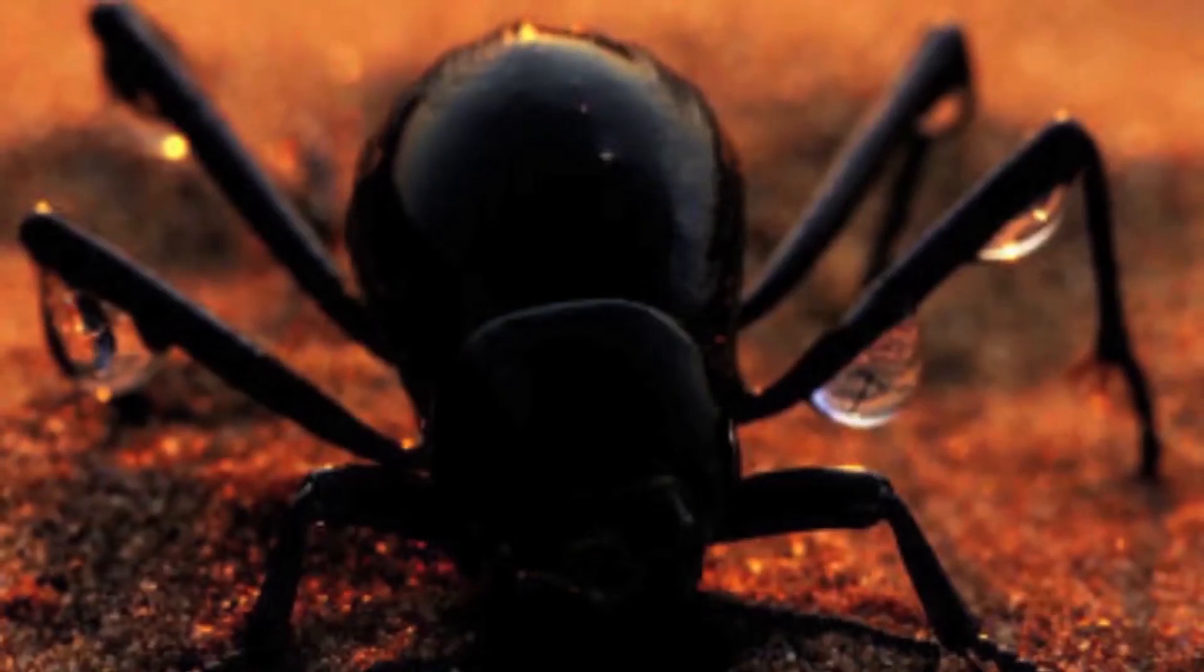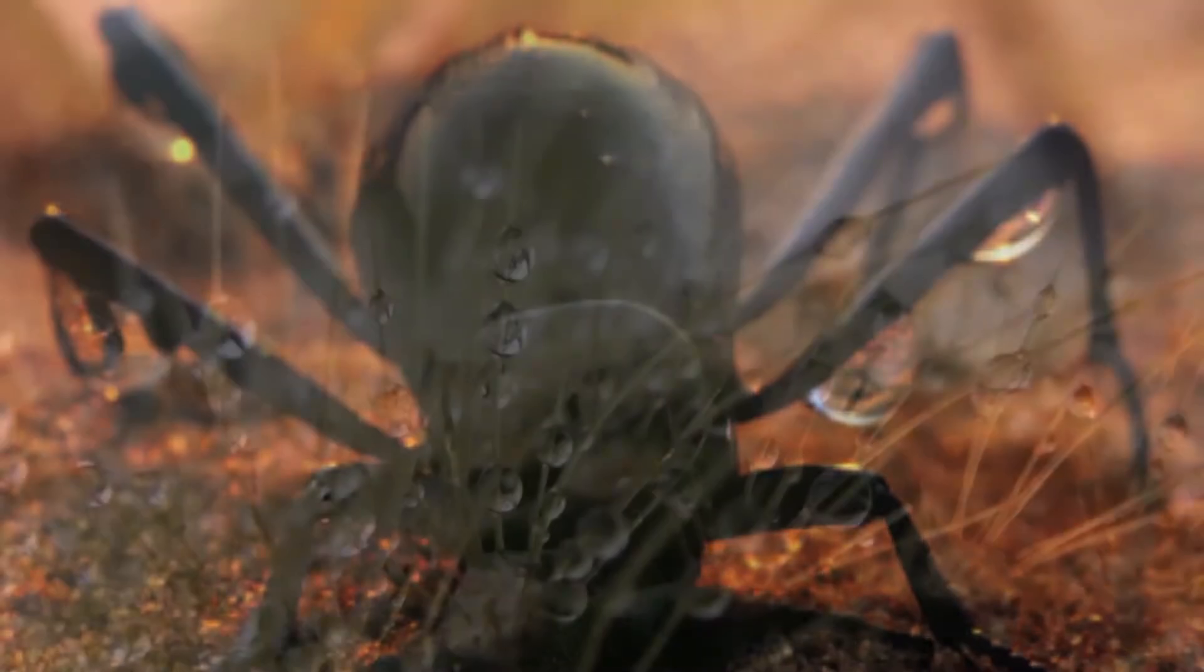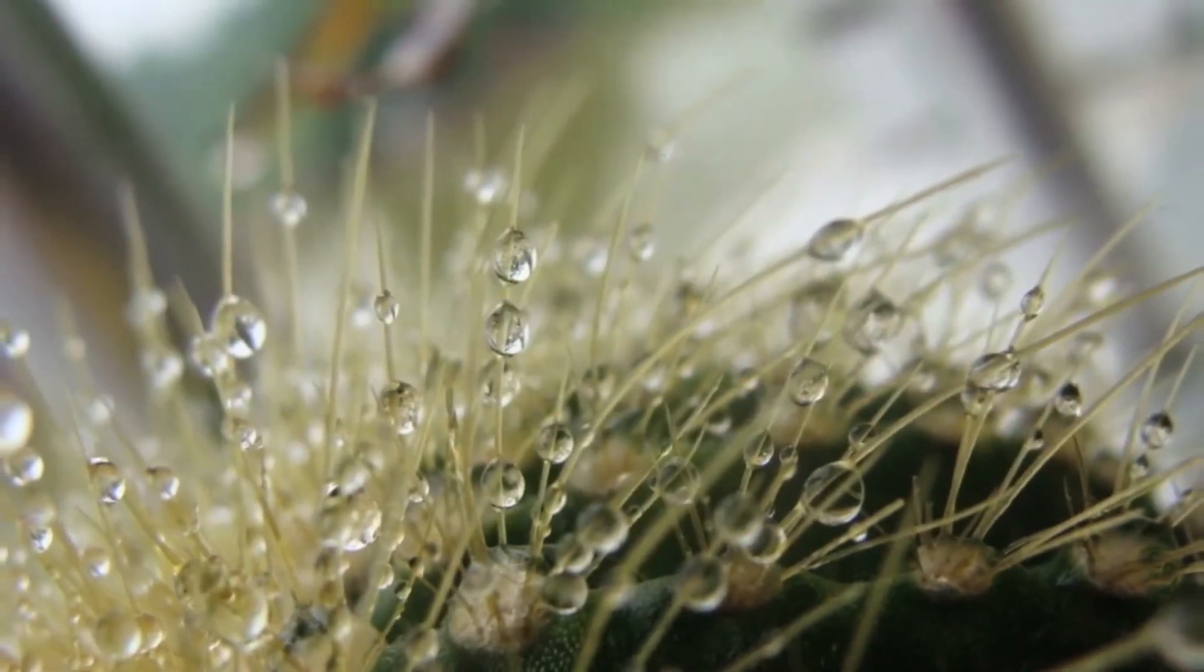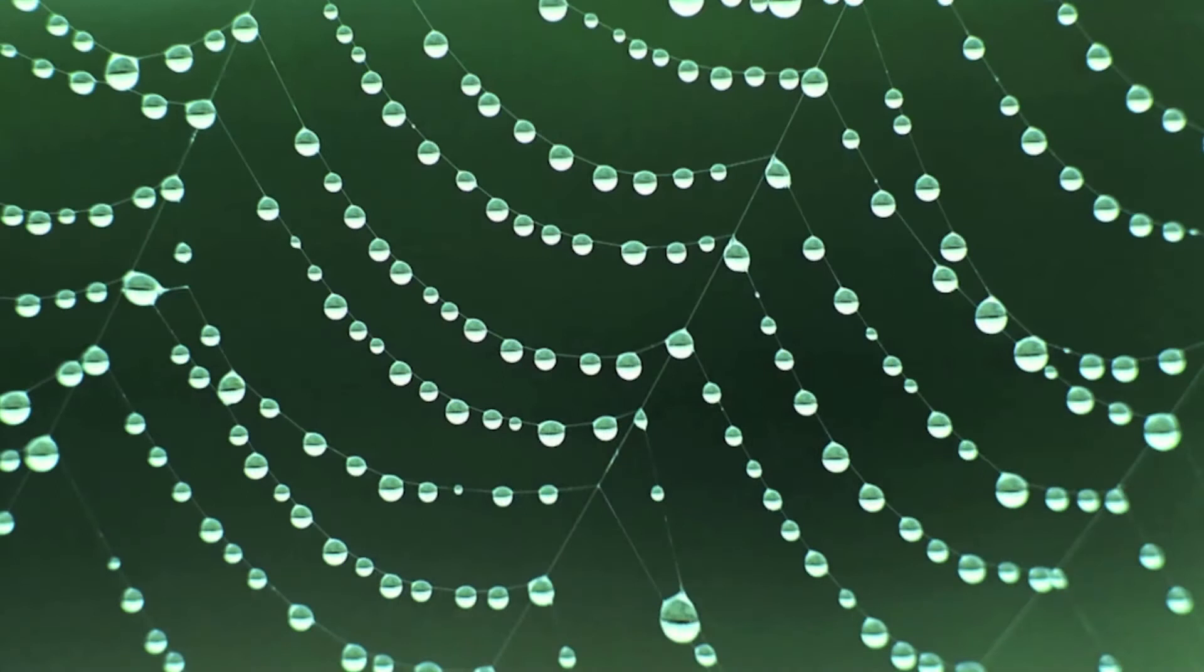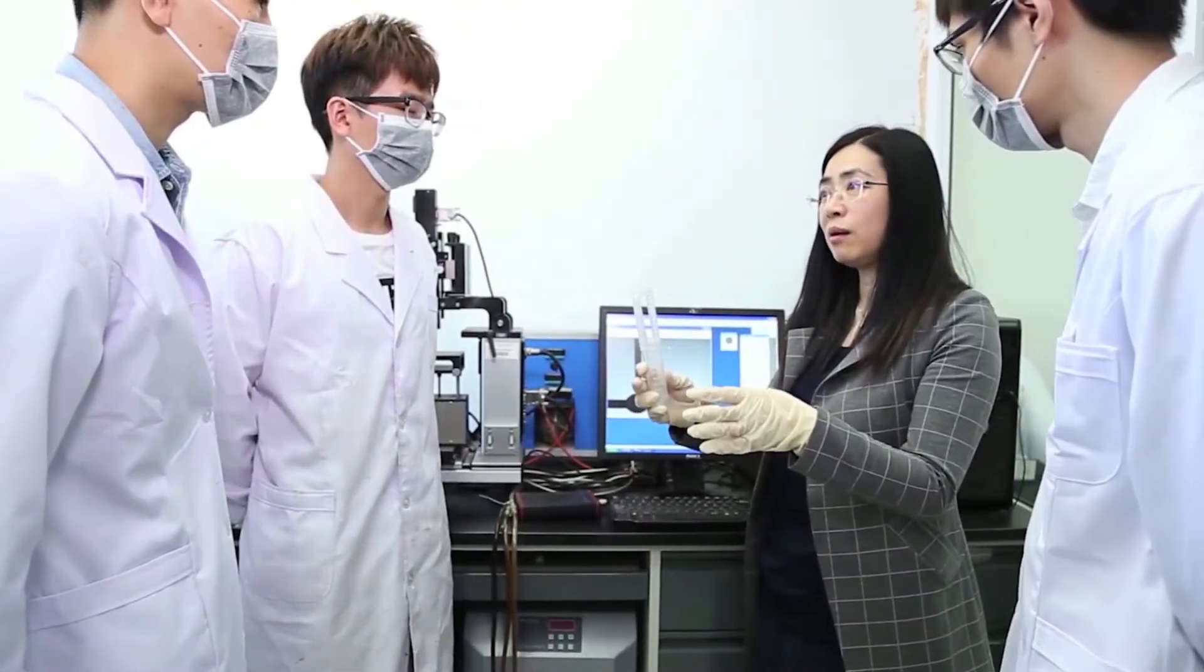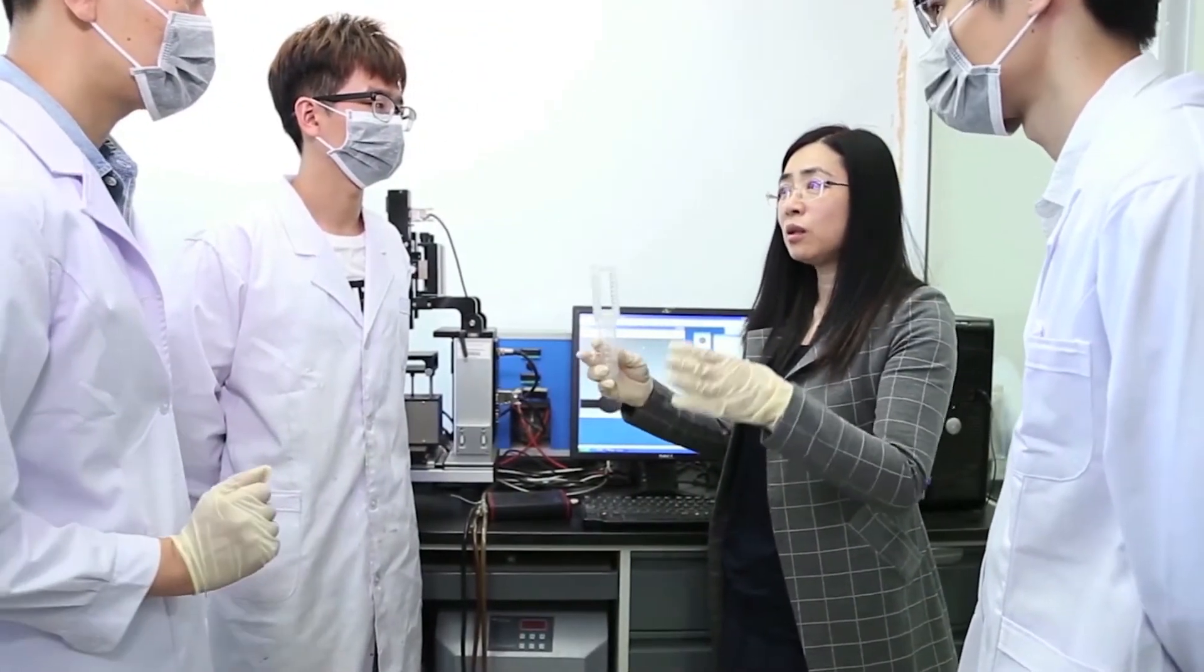Biological surfaces, example plants and animals, have been optimized with hierarchical structures to achieve excellent adaptive performances in arid environments, such as surfaces of cactus and beetles, wet spider silk, display the intriguing fog harvesting abilities from air.